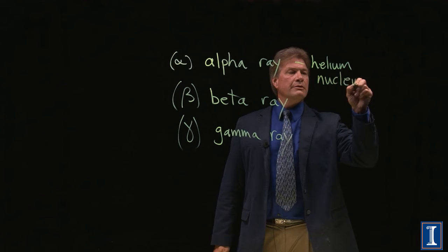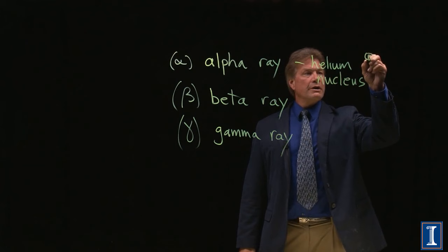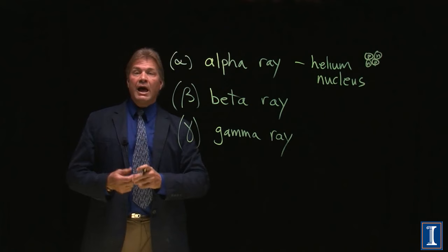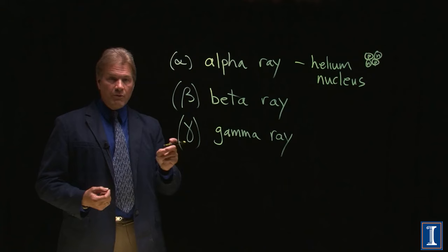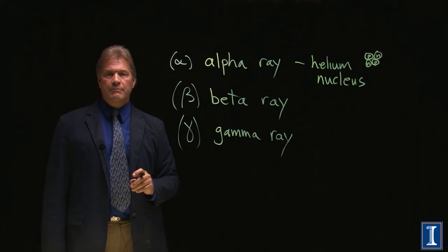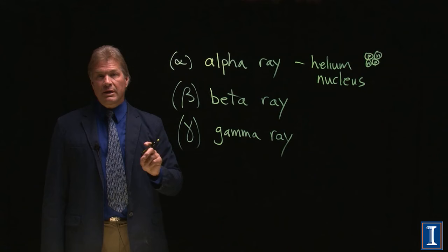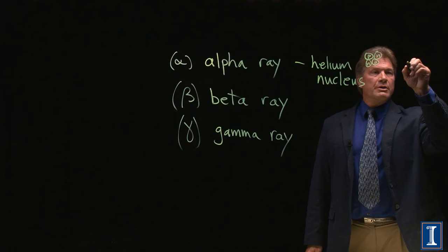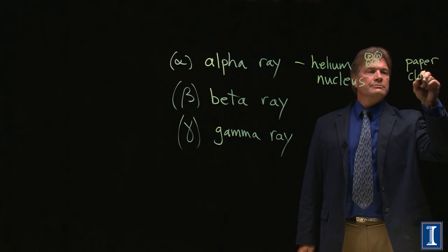Alpha ray is simply a helium nucleus. That's right, just two protons and two neutrons. If I could take helium from a balloon, ionize it like in a plasma, and accelerate one of those helium nuclei to high energy, that's exactly the same as an alpha ray. Alpha rays do not penetrate very far, in part because they're a heavy particle.